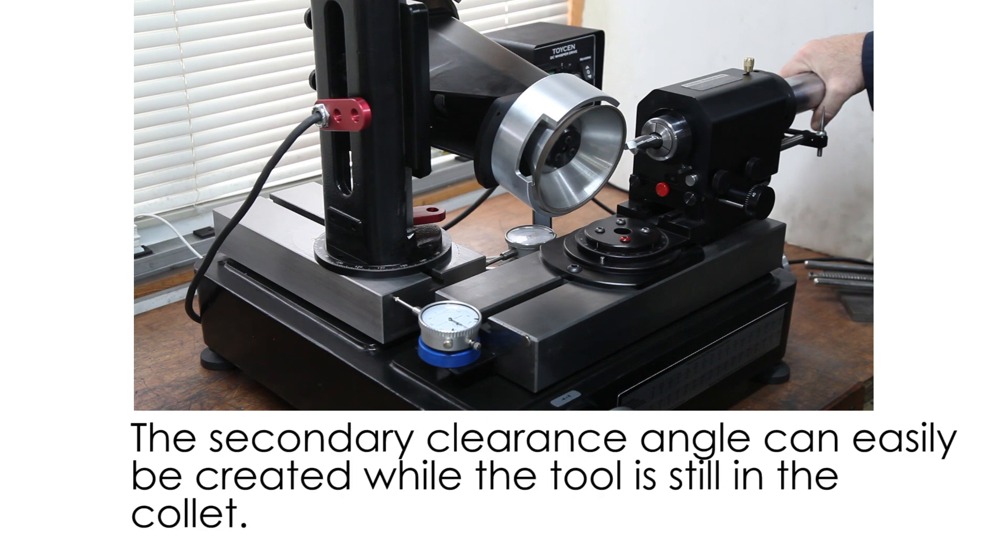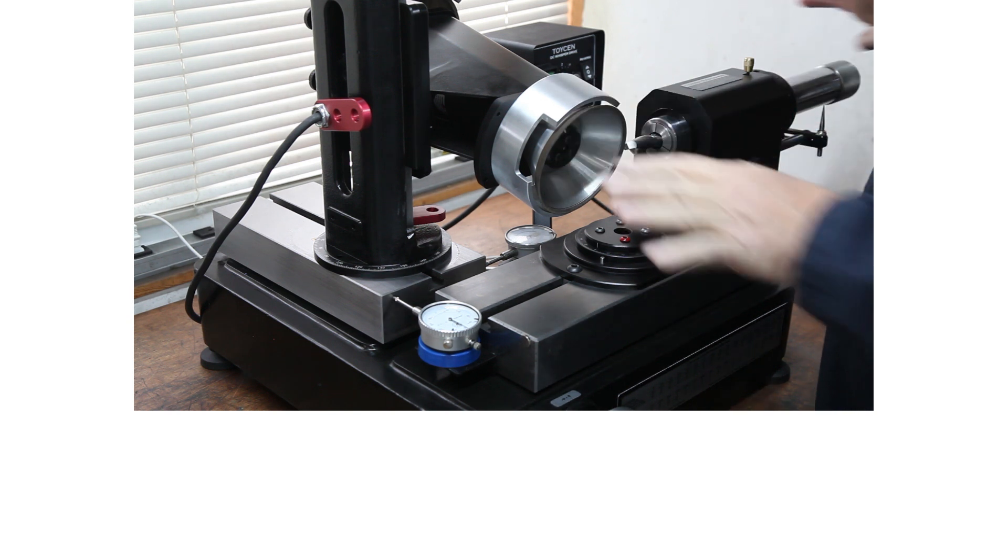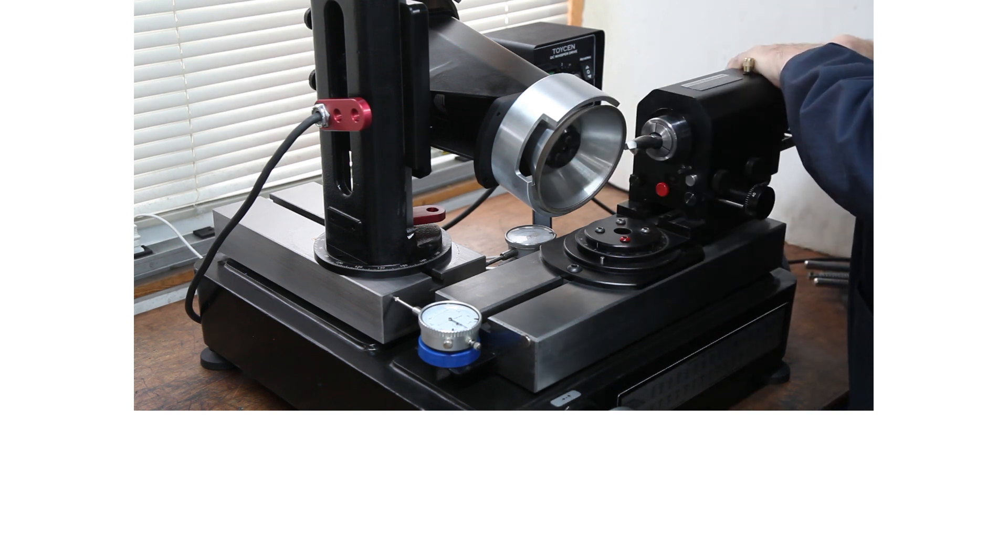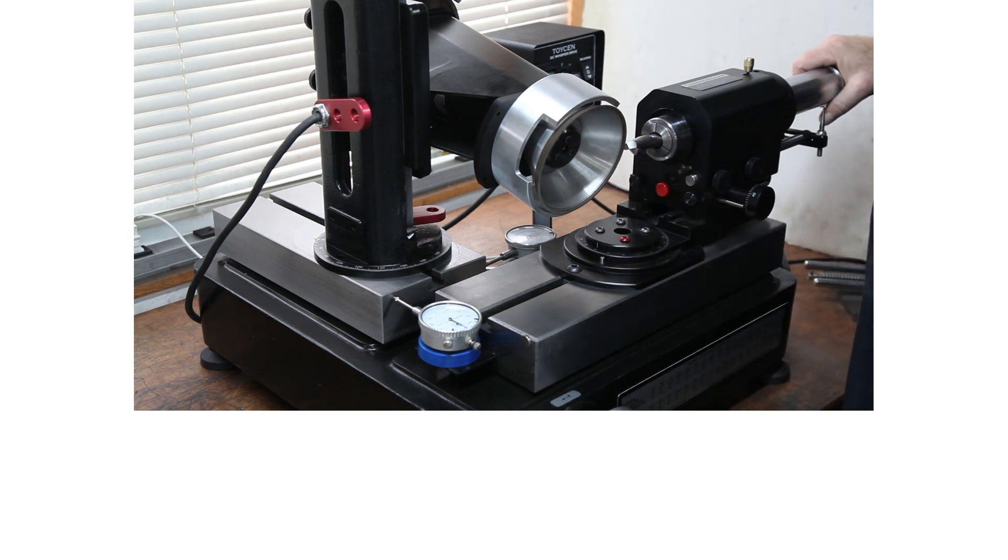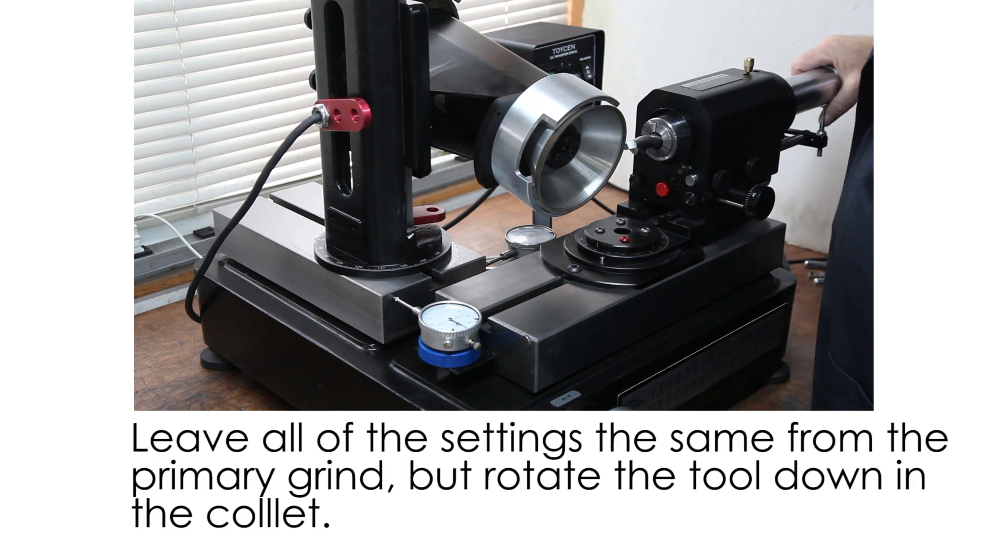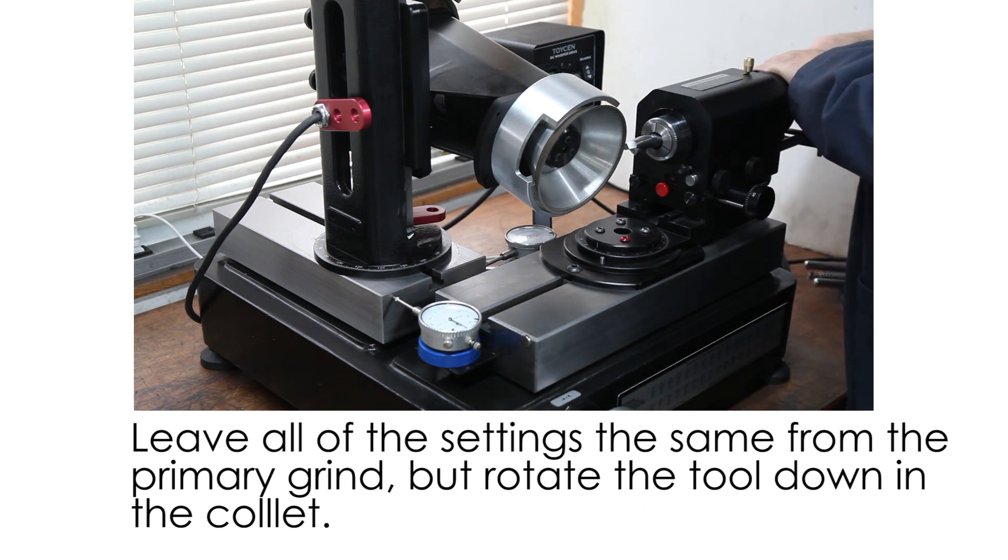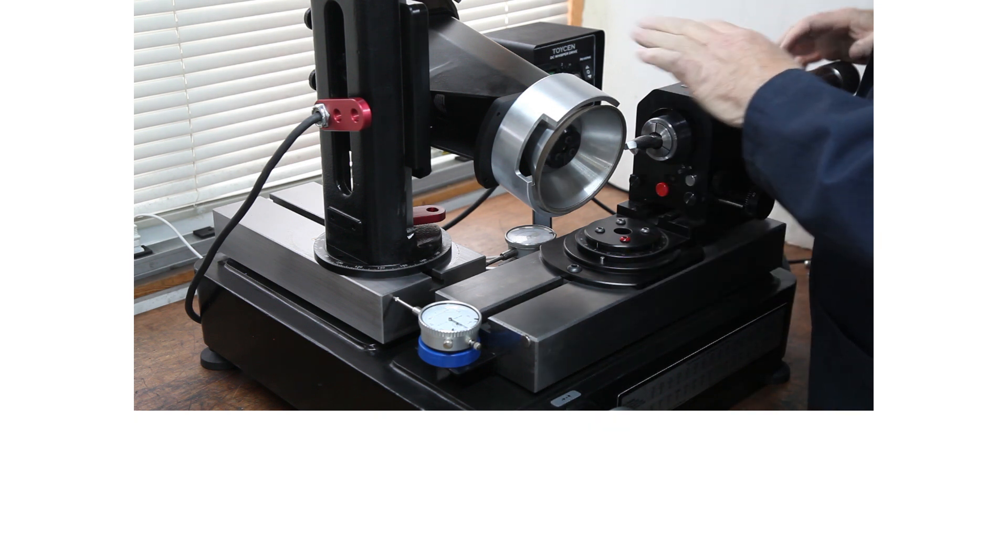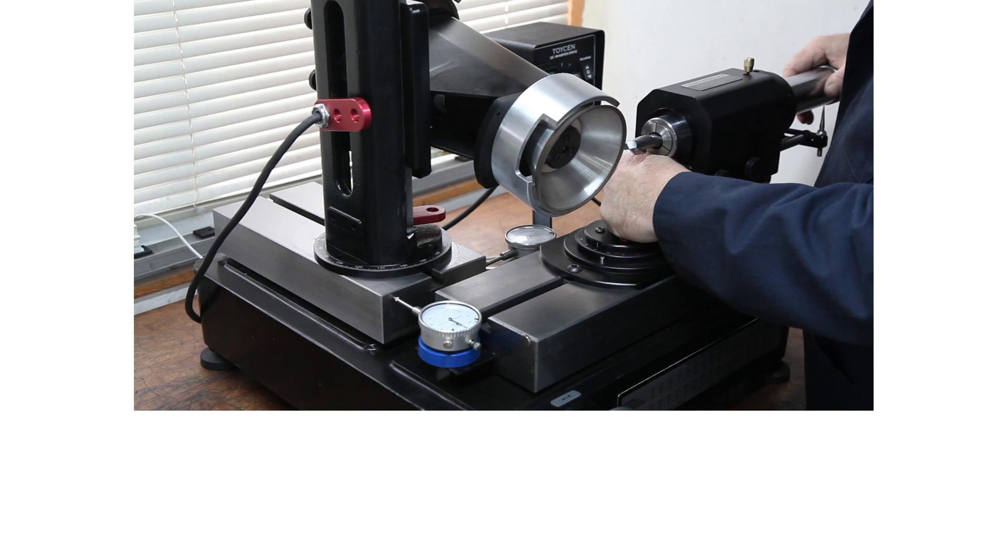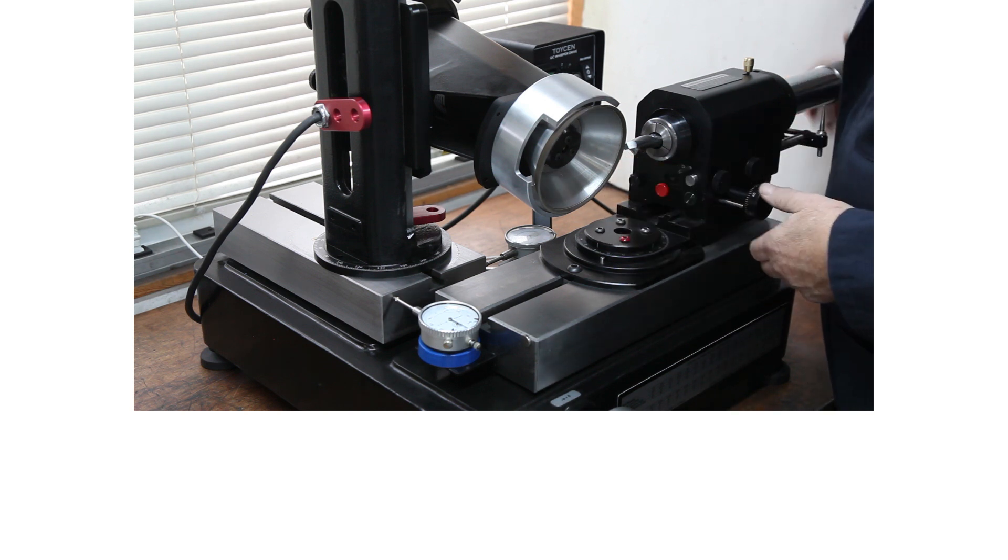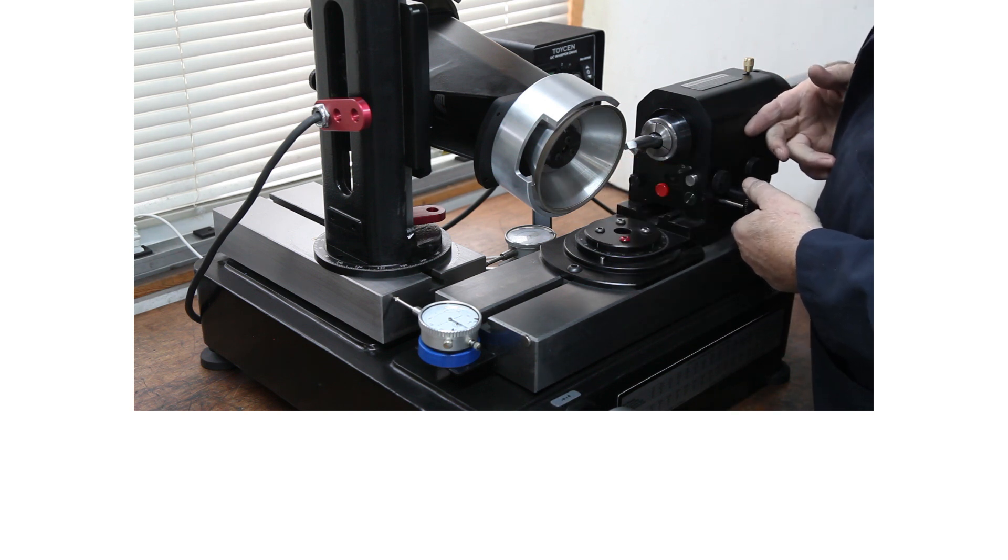So now you're going to put a secondary grind on this 3.25 inch end mill. The easiest way we've found to do that is just to leave all your settings, loosen up the tool, rotate it down a little bit, maybe 15 degrees, tighten the collet back up, and then you're going to leave the same radius on there, but you're going to move the upper spindle in, the upper white carriage in. Just move it in until it comes in contact with the wheel.